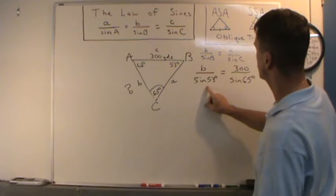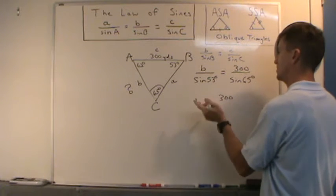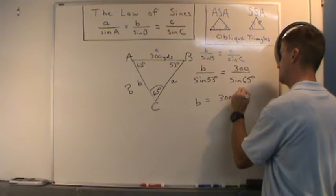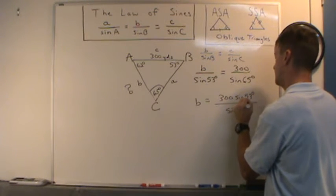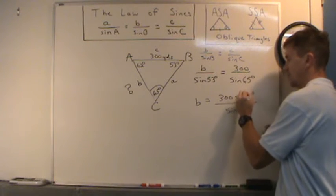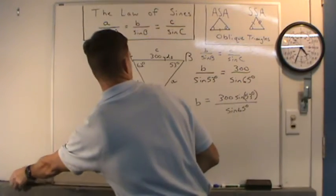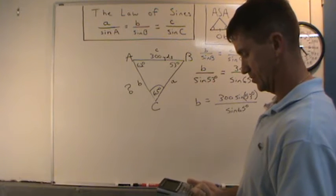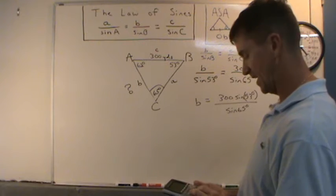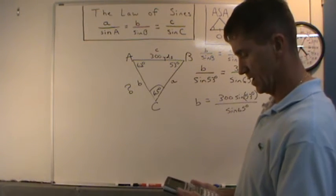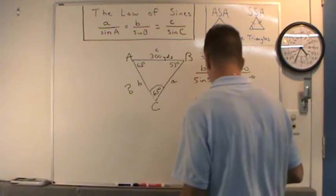Now all I have to do is solve for b. I multiply sine of 53 on both sides to get: b equals 300 times sine of 53, divided by the sine of 65. On the calculator — make sure it's in degree mode and close the parentheses for each sine — I type 300 times sine(53) divided by sine(65), and I get about 264.35, so I'll round to 264.4 yards.